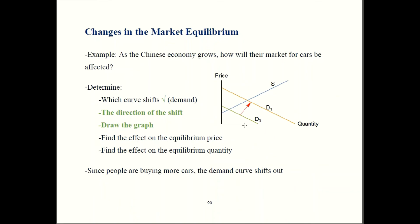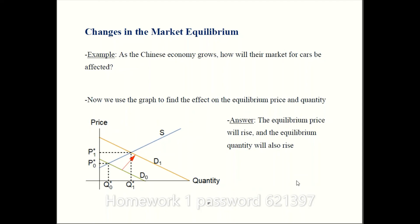Here's our graph. Old demand is back here. Once income rises, demand shifts out to D1. Price starts out being back here and then goes up to this level — so price rises. Quantity is originally over here, and in the new equilibrium quantity is going to be out there, so quantity should go up as well. We expect to see an increase in both price and quantity when incomes rise — that's how the market for cars in China should be affected.